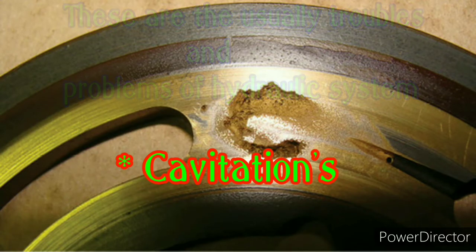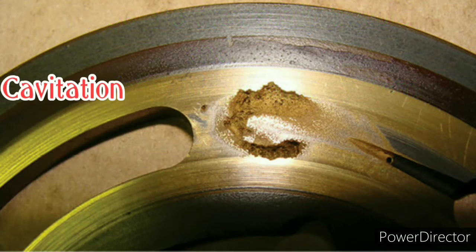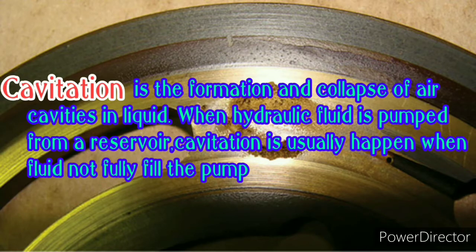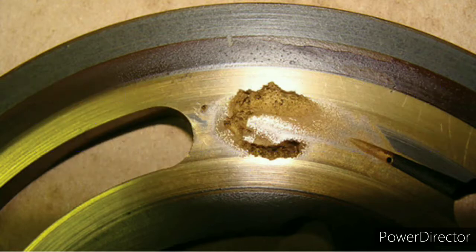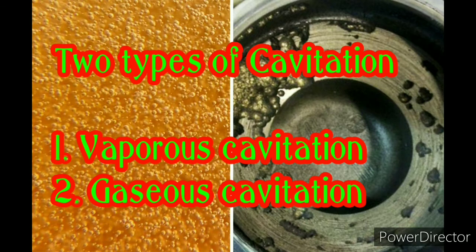Cavitation. Cavitation is the formation and collapse of air cavities in liquid. When hydraulic fluid is pumped from a reservoir, cavitation usually happens when fluid does not fully fill the pump. There are two types of cavitation: vaporous cavitation and gaseous cavitation.